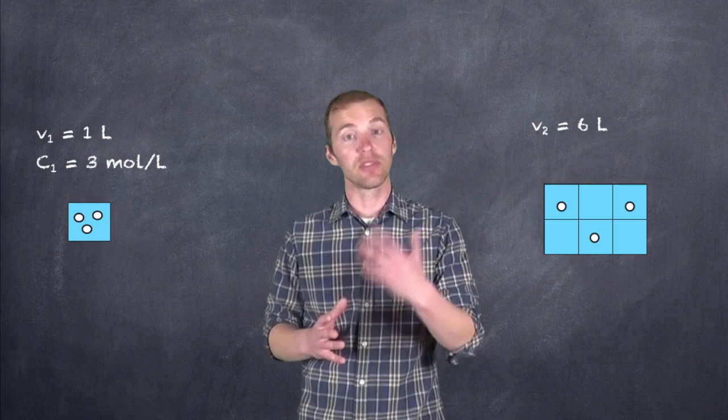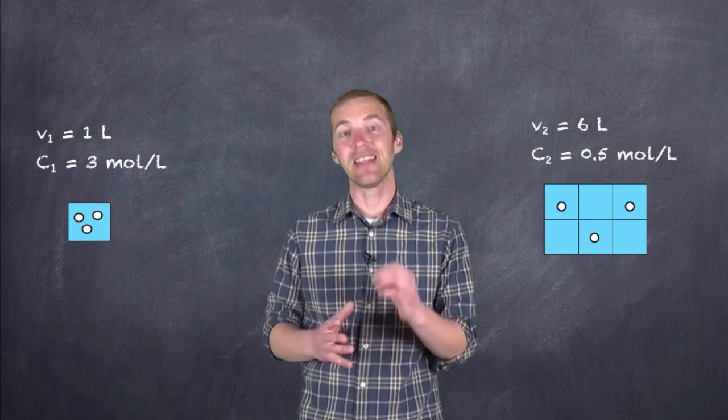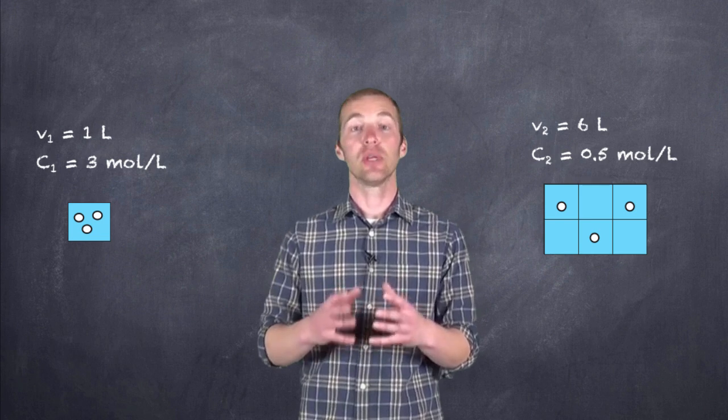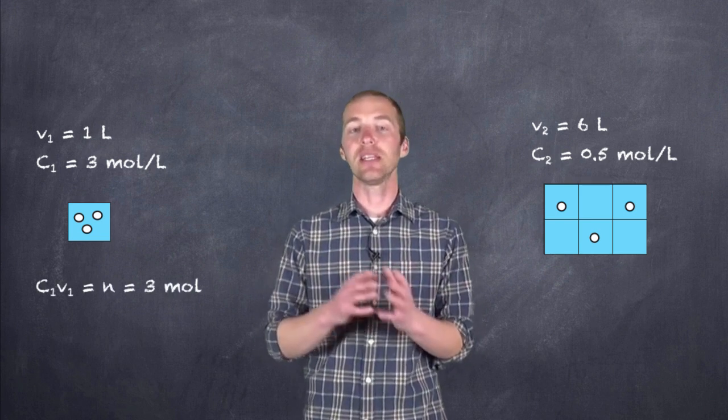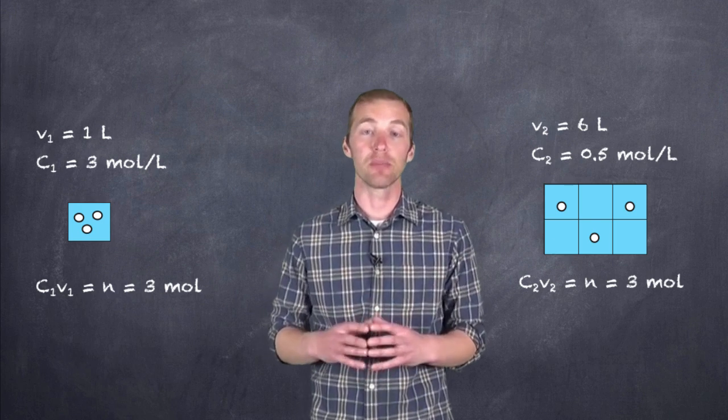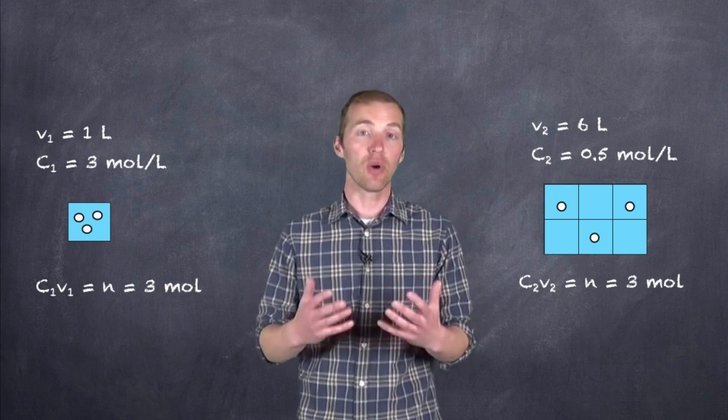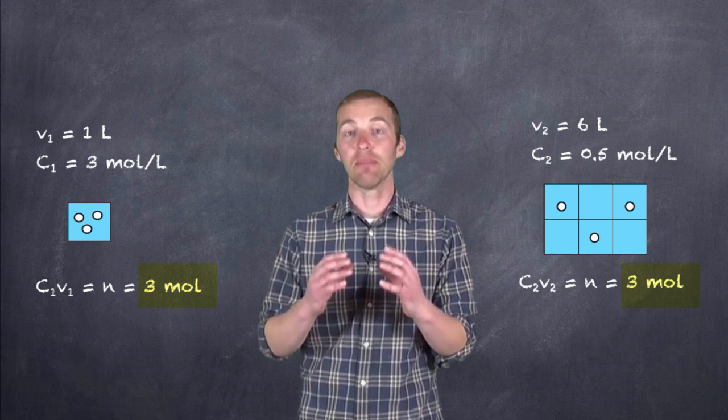What has changed though, as a result of this increase in solvent, is that the concentration has changed to 0.5 moles per liter. But if we take a look at C times V for both of these relationships, we'll see that the number of moles of solute remains at three moles.